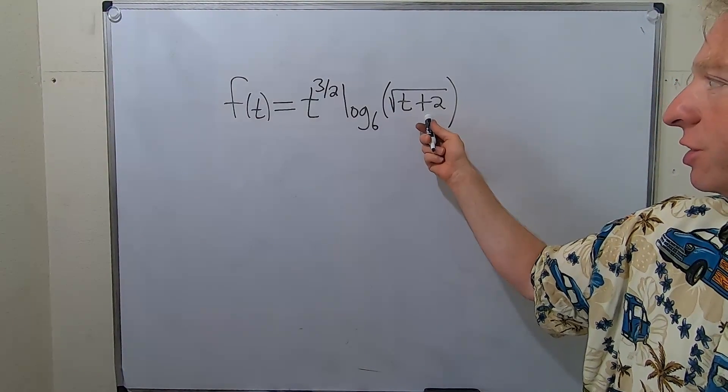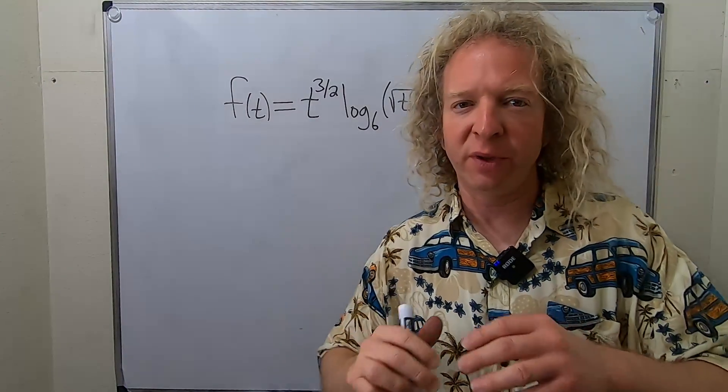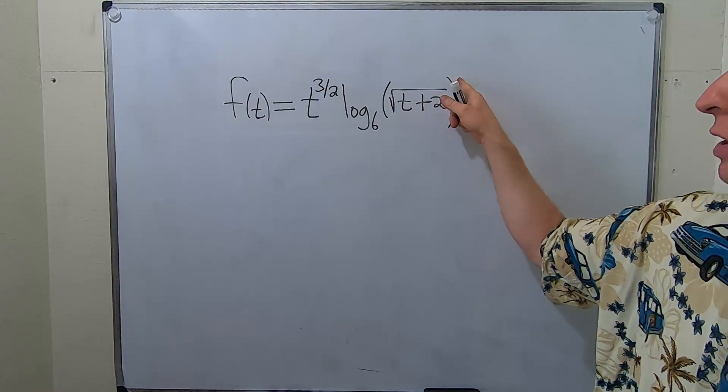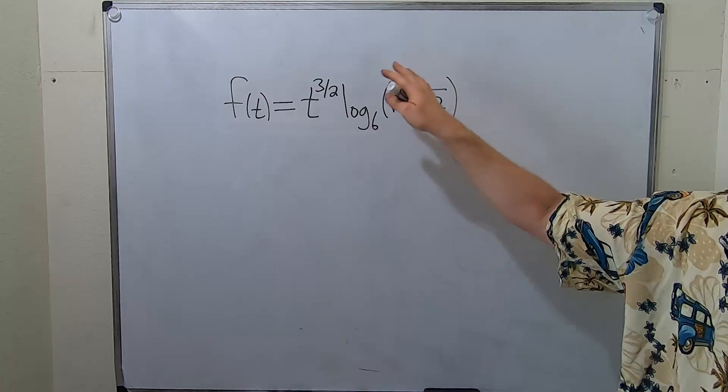Notice we have a square root function here. Whenever you have a square root function you can write it with the exponent of 1 half. So what we're gonna do is we're gonna do that and then we're gonna put it in the front just to make things a little bit easier.